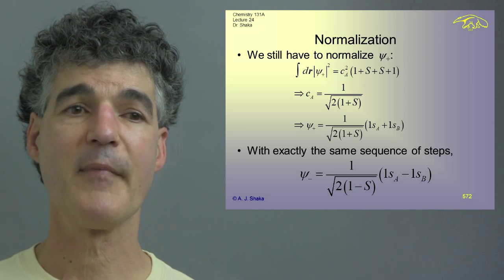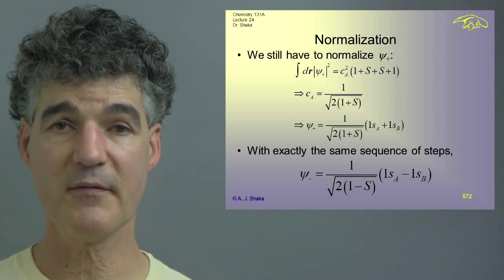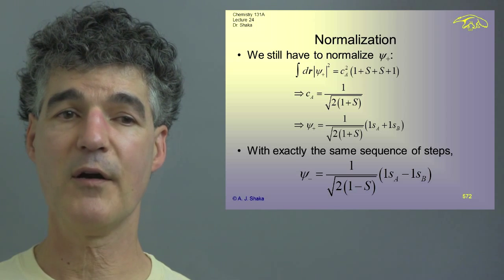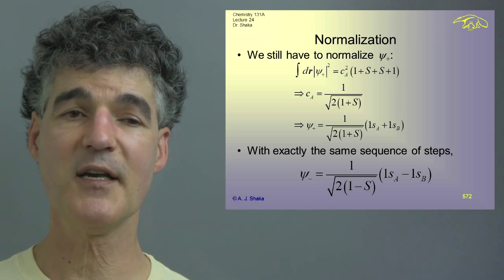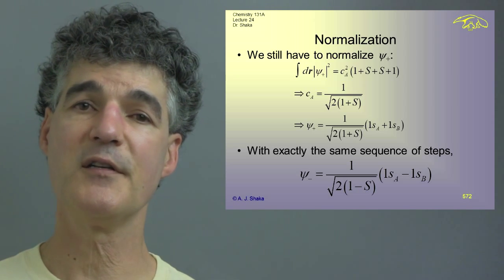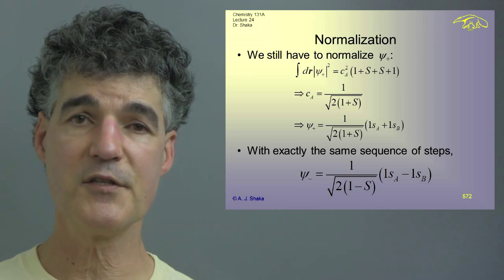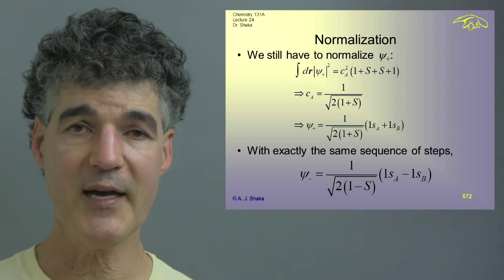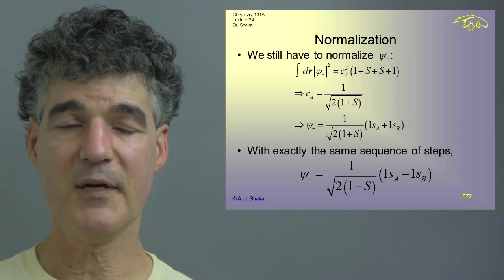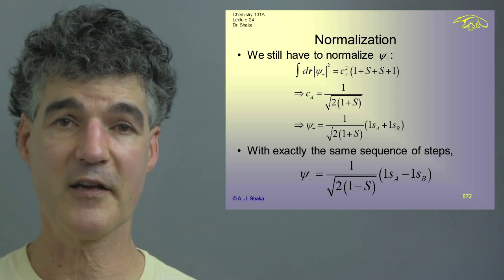With exactly the same sequence of steps, substituting in the negative energy instead, I get psi minus equals 1 over sqrt(2(1−S)) times (1sA minus 1sB). I have to choose which one is plus and minus, but it doesn't matter because the phase of the wave function doesn't matter. Whether it's 1sA minus 1sB or the other way round, it doesn't change the overall probability density.